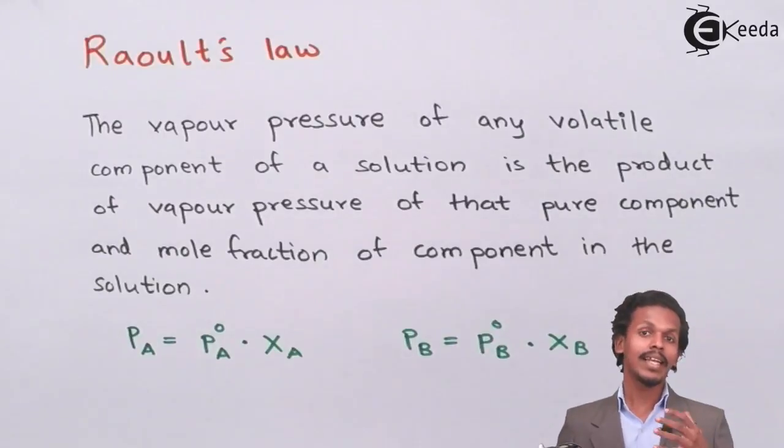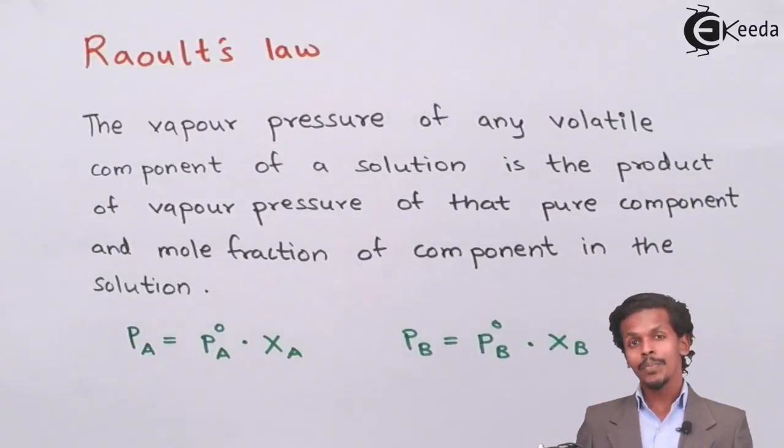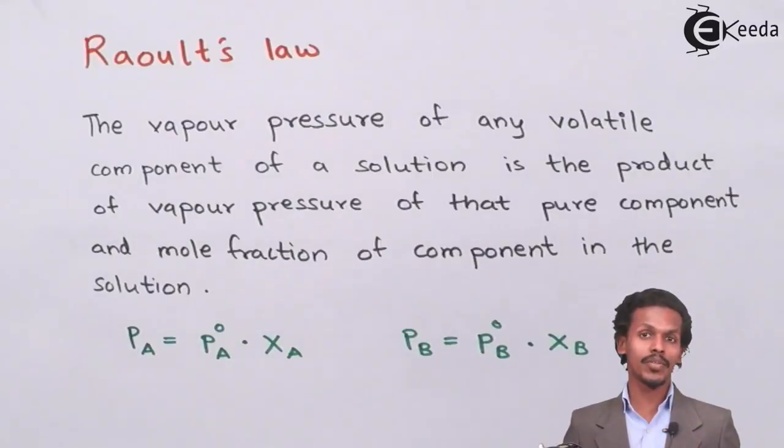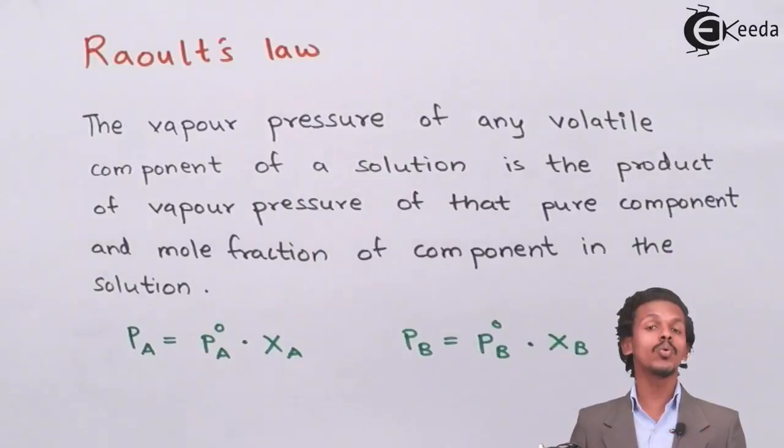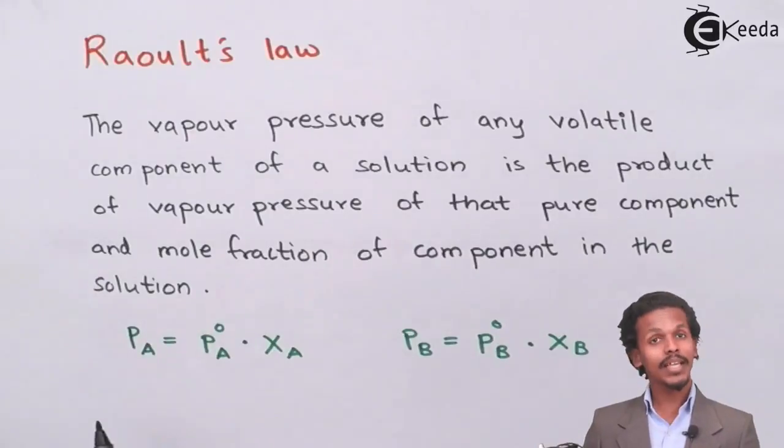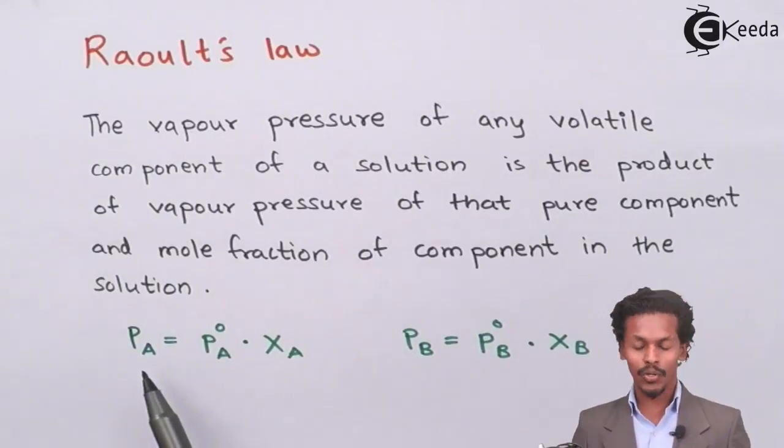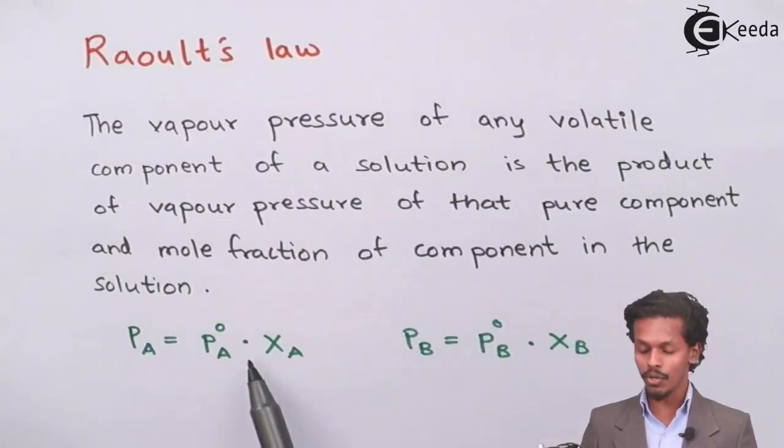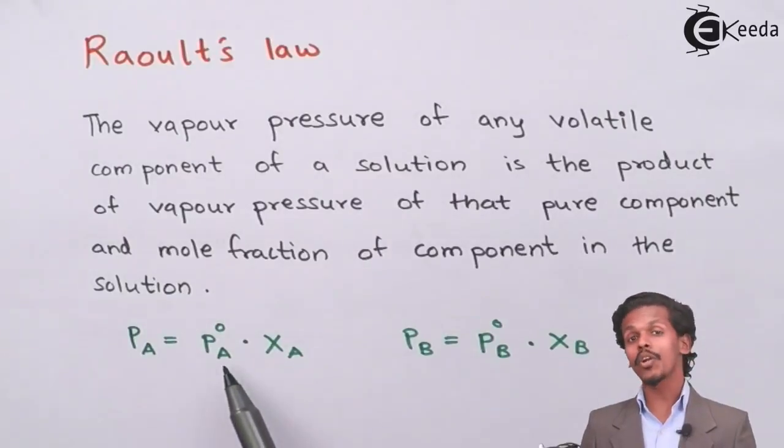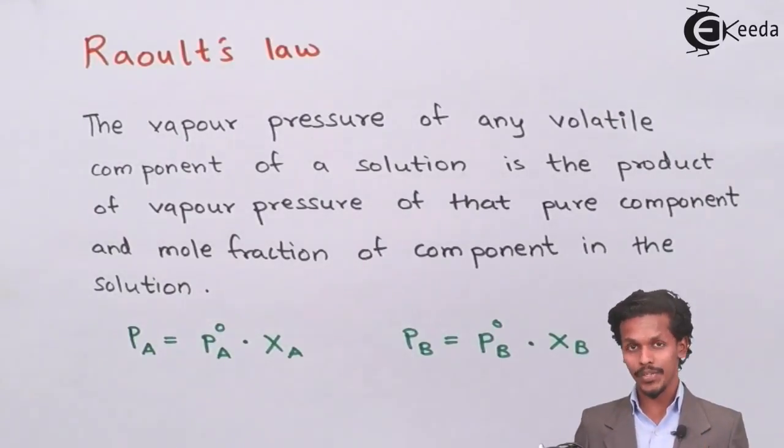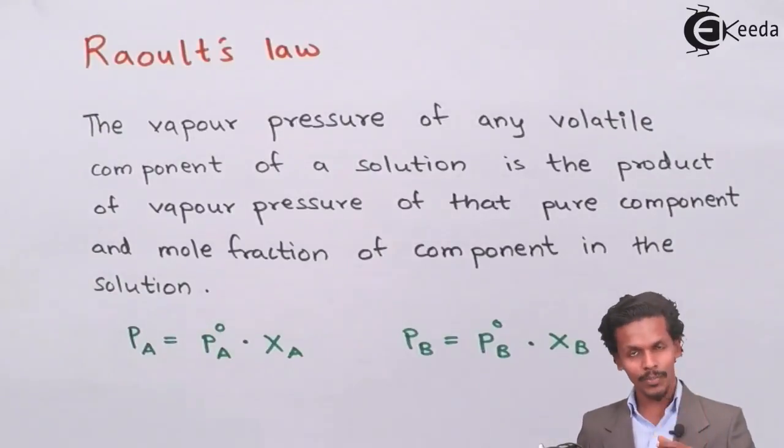There are basically two components present in the solution - a solute and solvent. If there are two volatile components in the solution, like component A, according to Raoult's law it will be a product of P naught of A (pure component vapor pressure) into mole fraction of that component, X A.